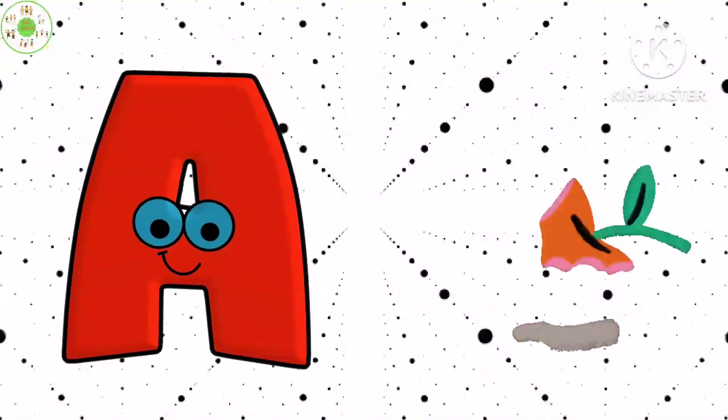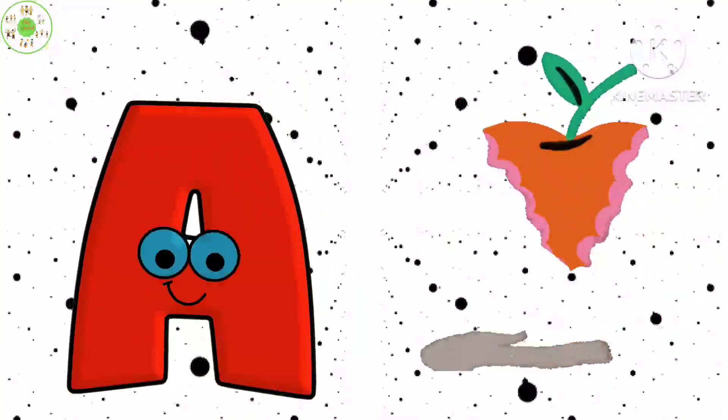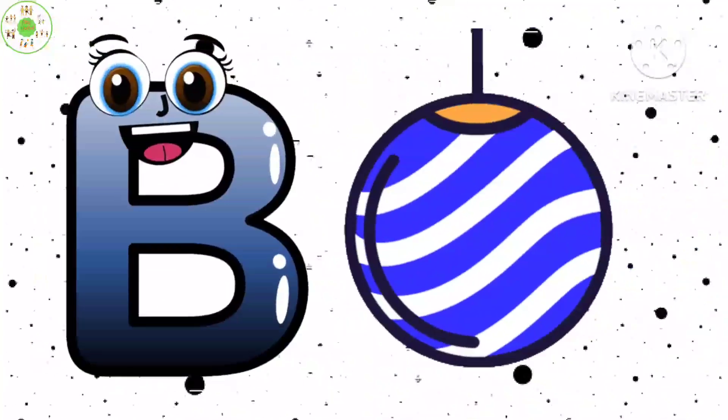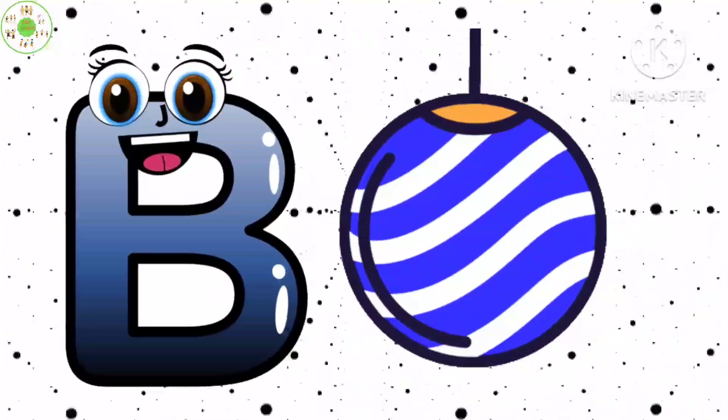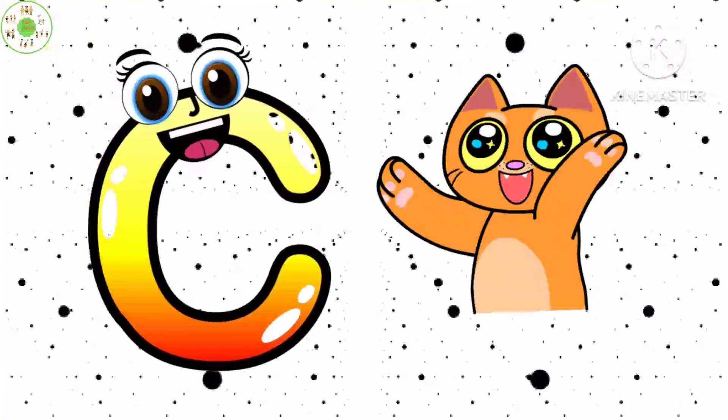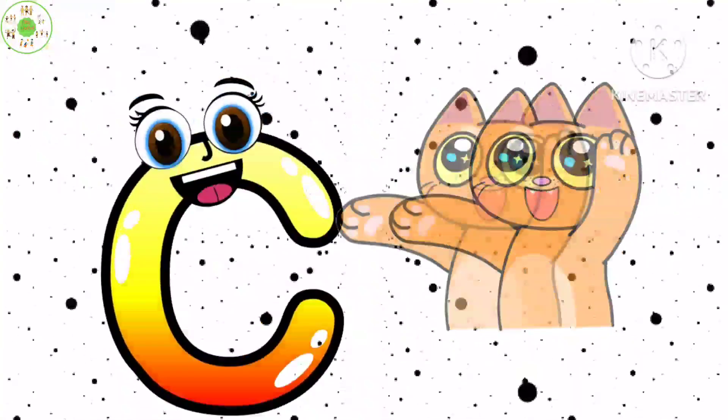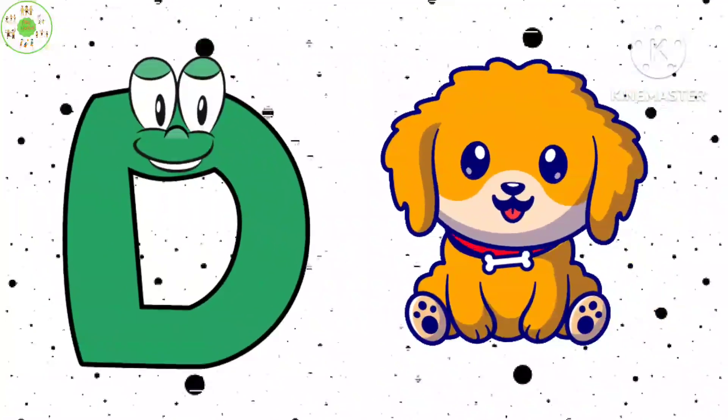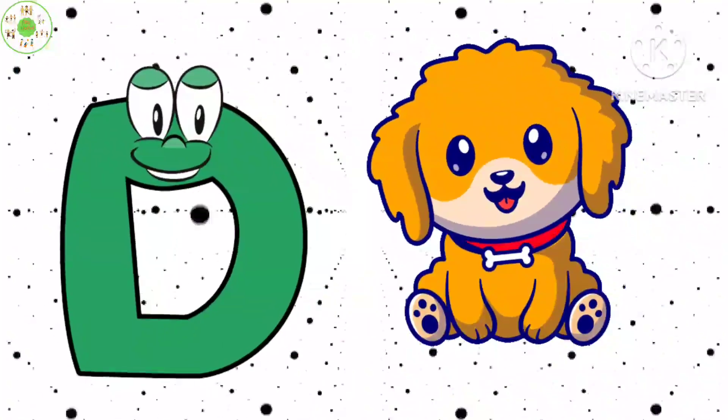A is for Apple, A-A-Apple. B is for Ball, B-B-Ball. C is for Cat, C-C-Cat. D is for Doll, D-D-Doll.